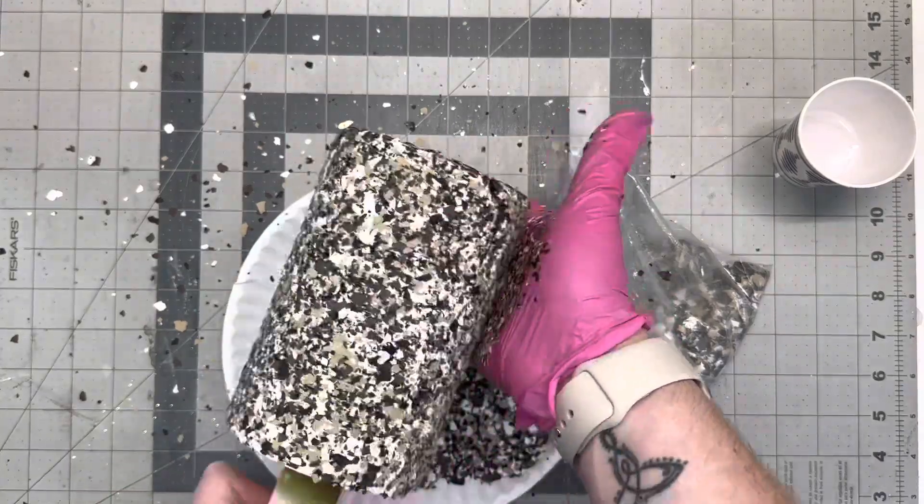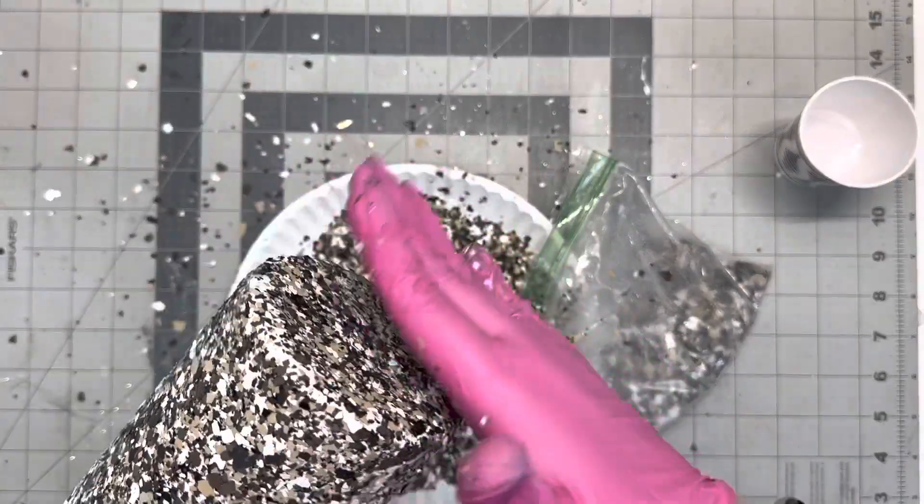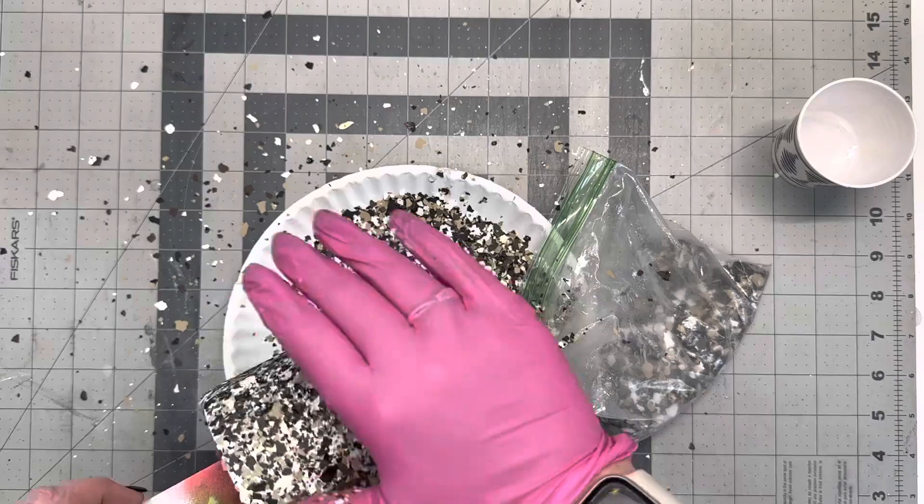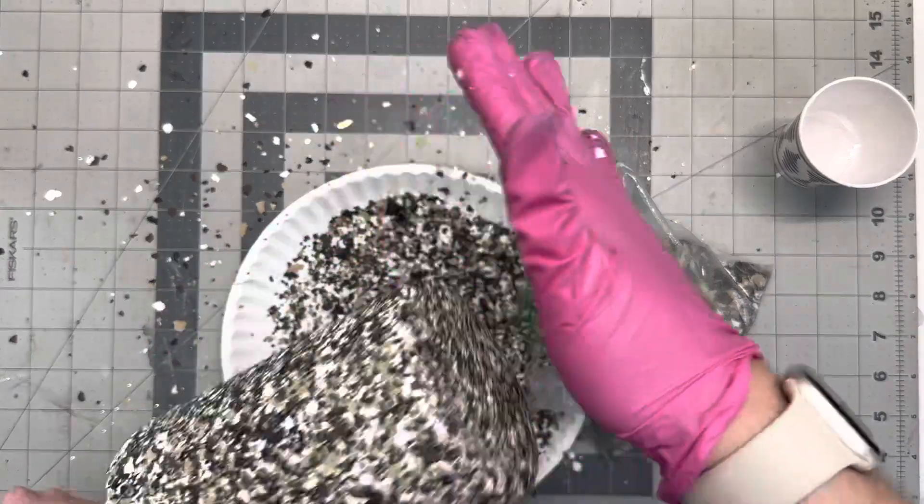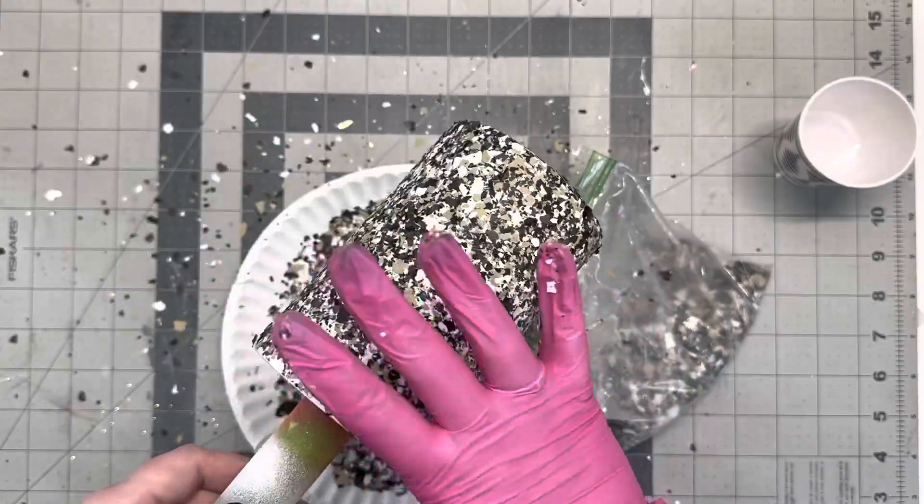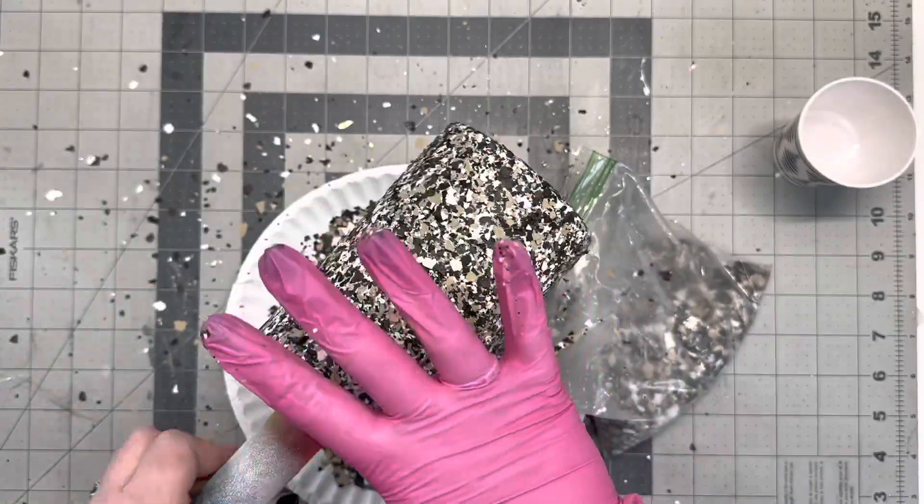So this is the same concept as if you were glittering. You're going to lay down your chunkiest glitter first and then you're going to come back in and fine tune that with a fine coat of glitter. Same concept here, you're just filling in the spaces with the smaller chunks of this paint chip.